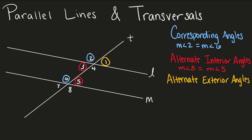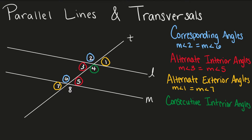Angle 4 and angle 5 are consecutive interior angles. These angles are on the same side of our transversal and are on the inside of our parallel lines. Consecutive interior angles add up to give us 180 degrees, so the measure of angle 4 plus the measure of angle 5 equals 180.